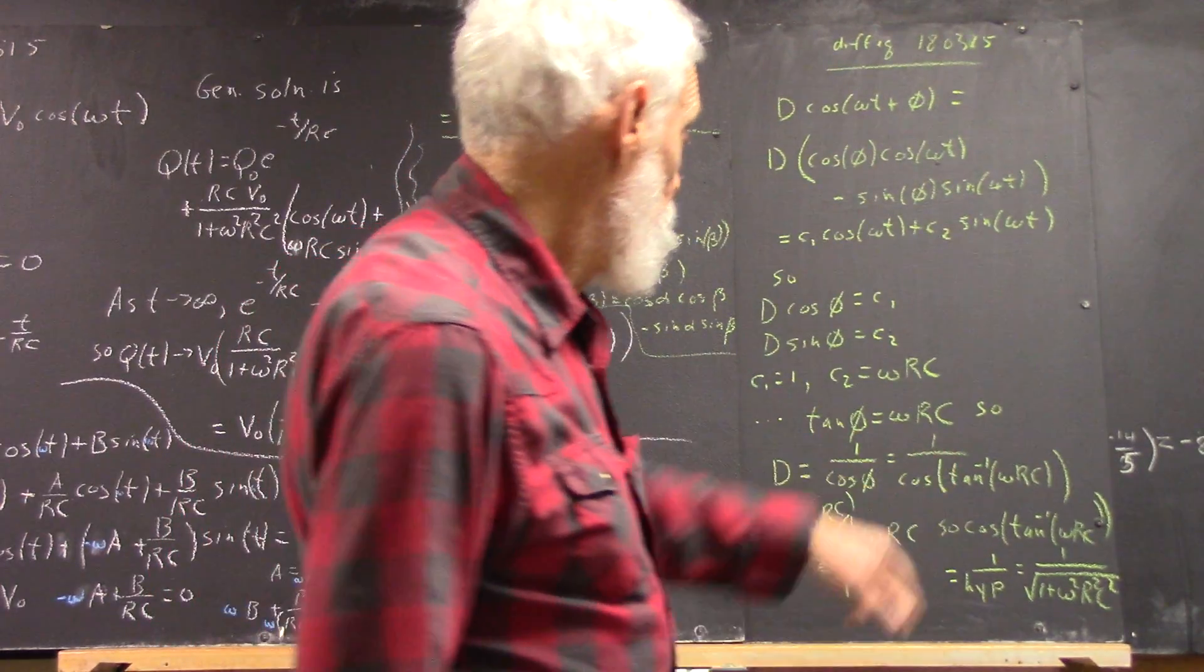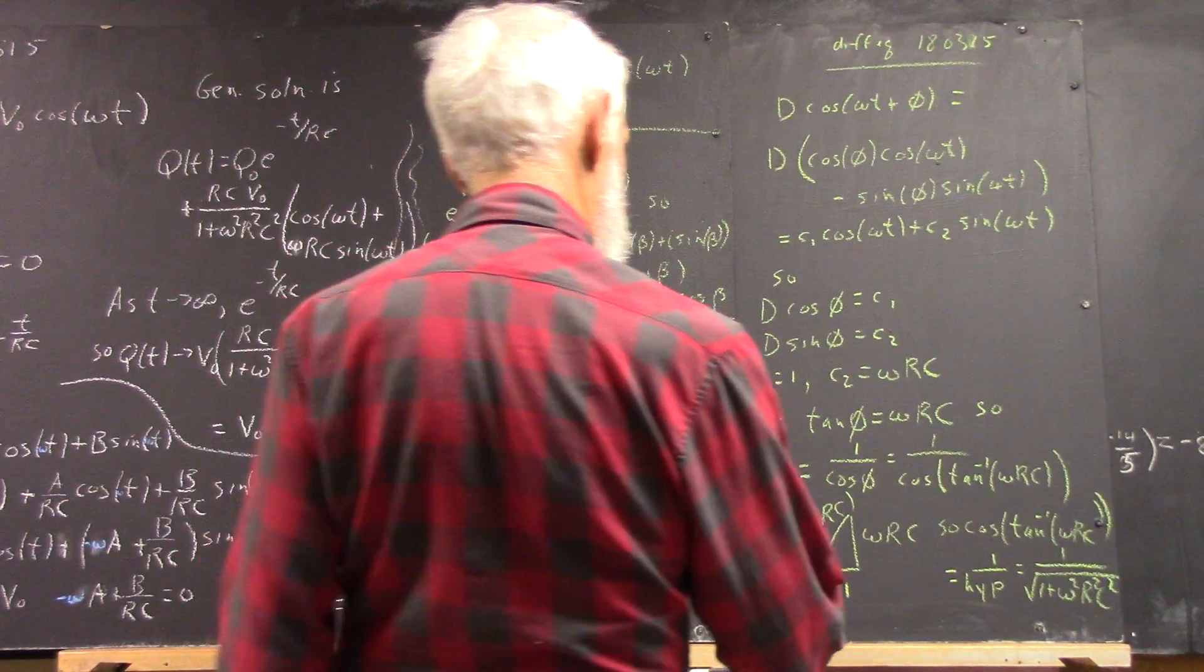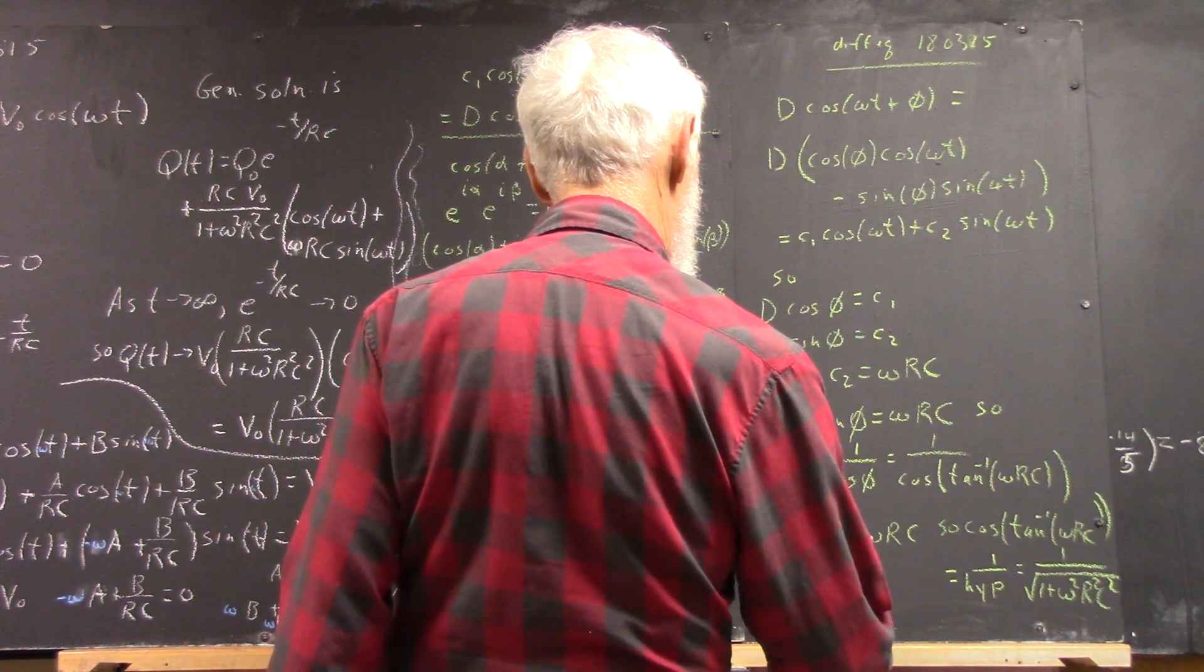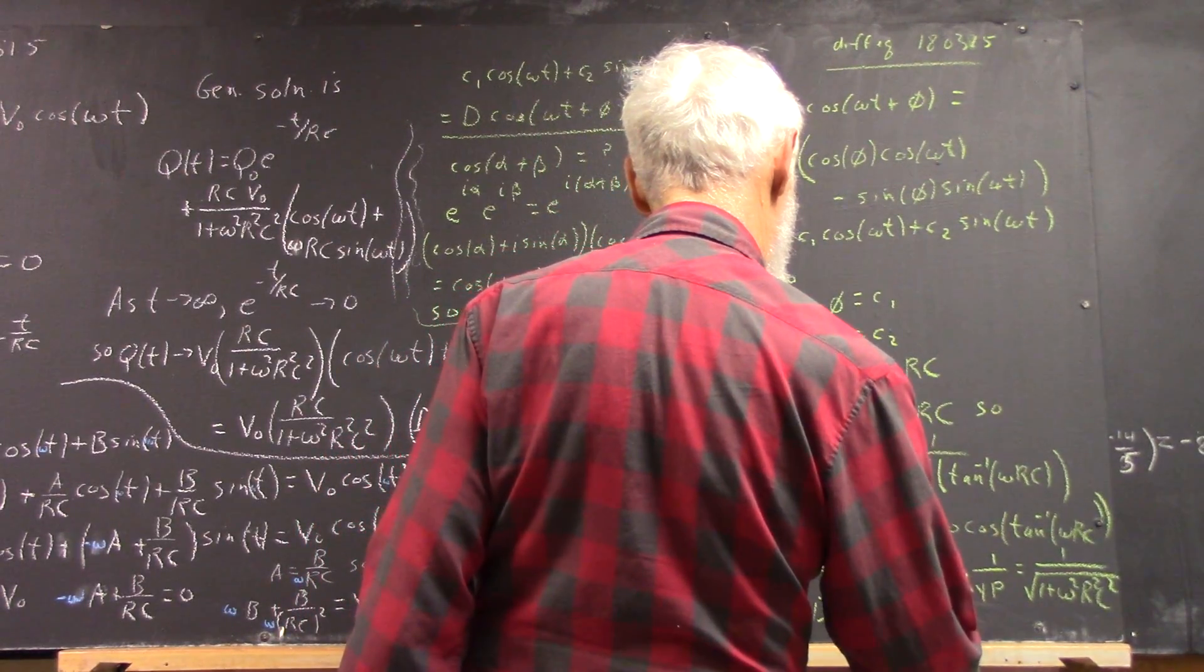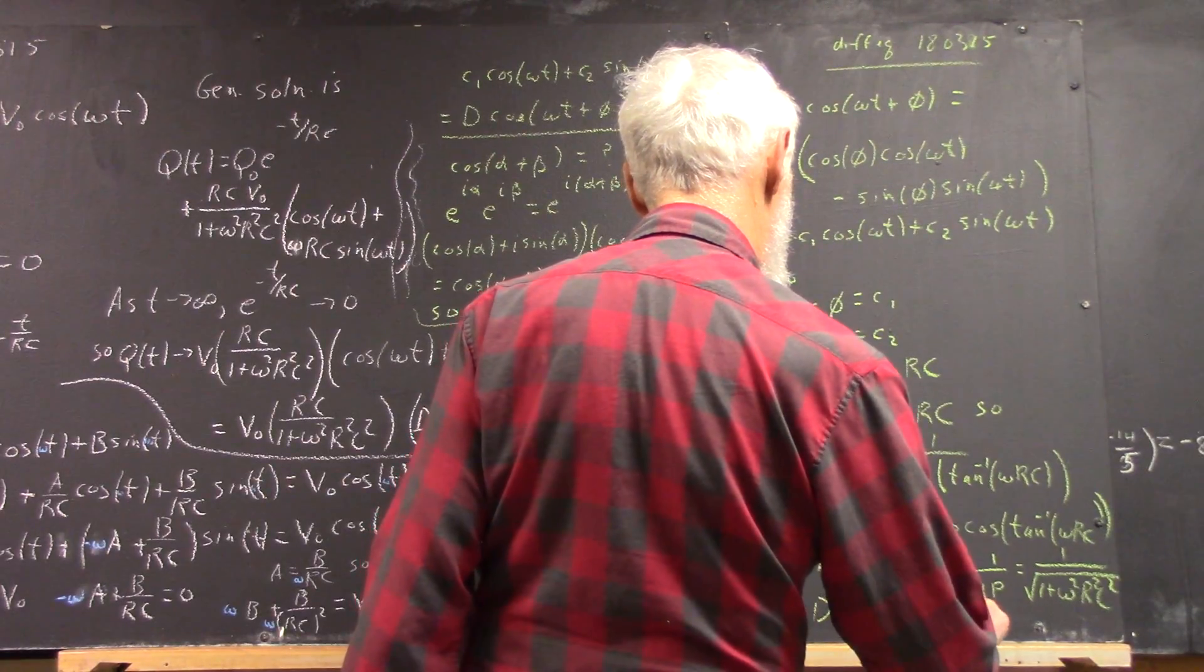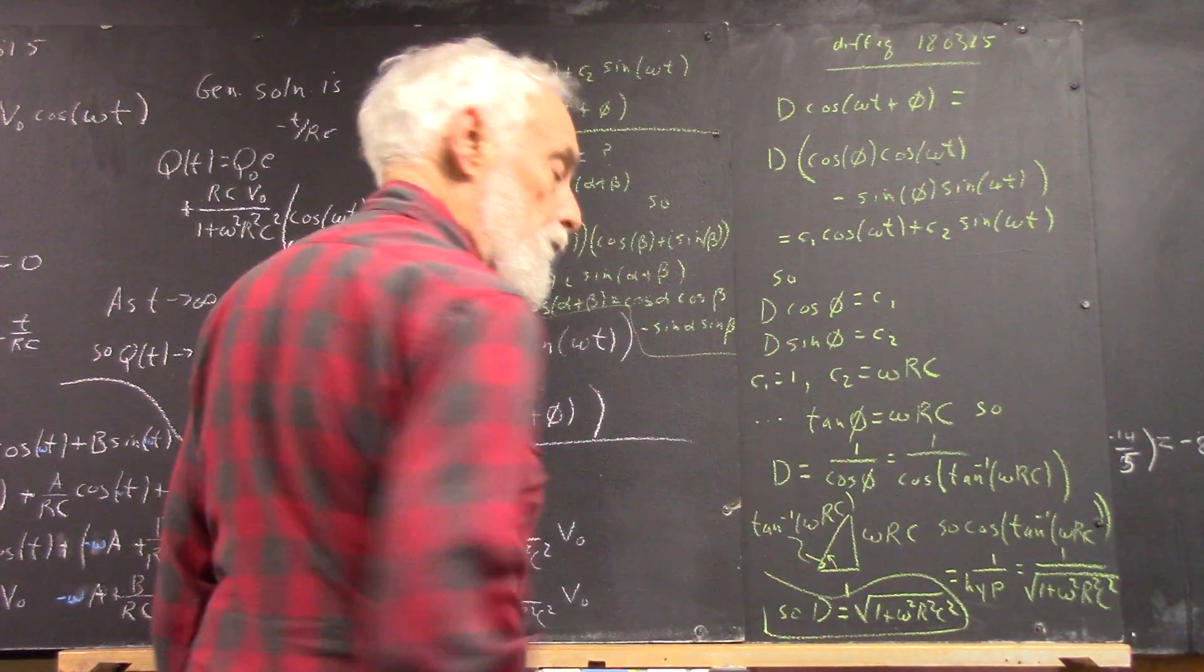So the d is this: the square root of 1 plus omega RC squared.